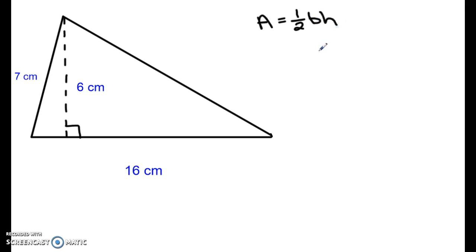Step two we're going to substitute in our values for base and height. In this triangle we can see that the base is going to be 16 centimeters with a height of 6 centimeters. Remember that base and height must always be perpendicular meaning that they form a right angle.